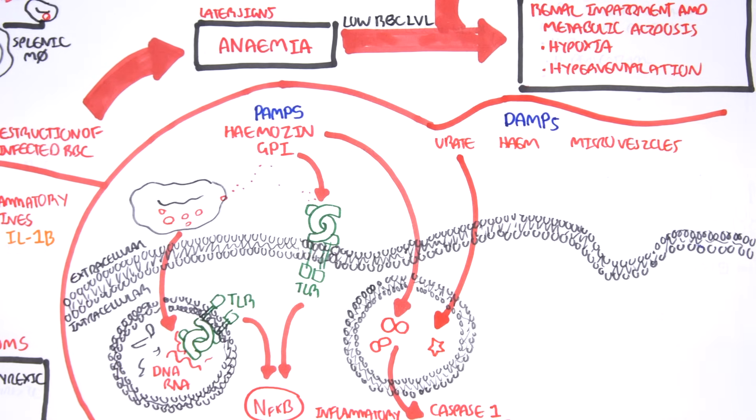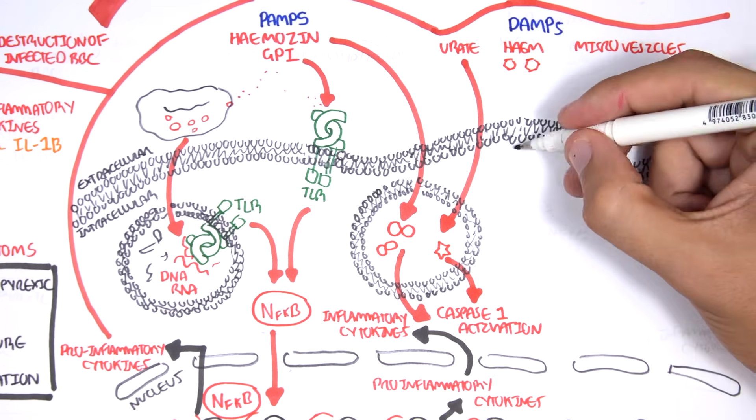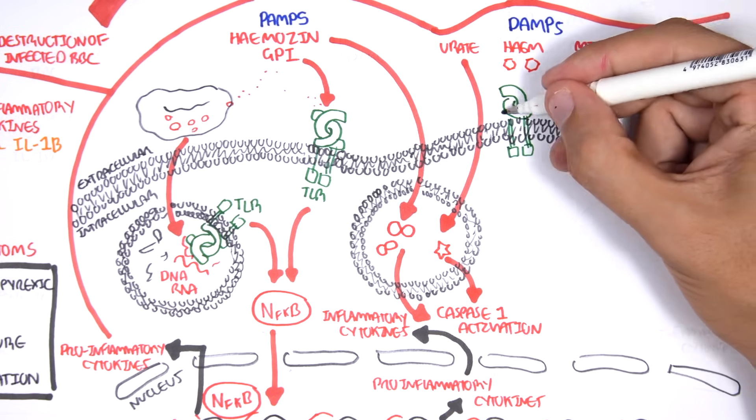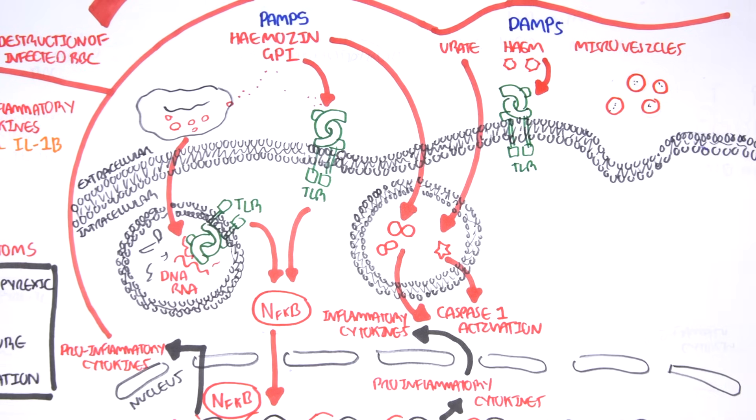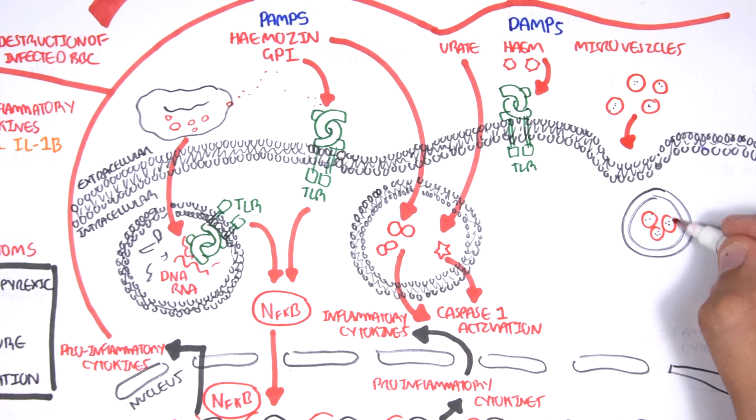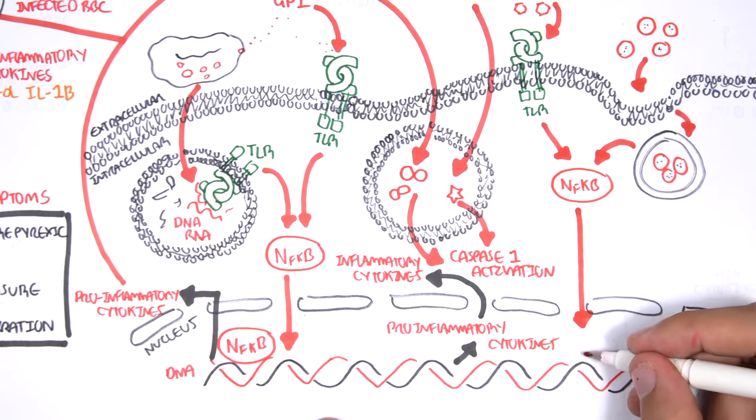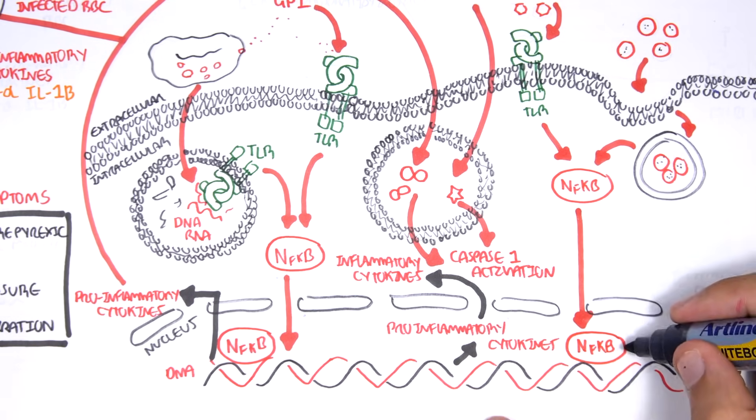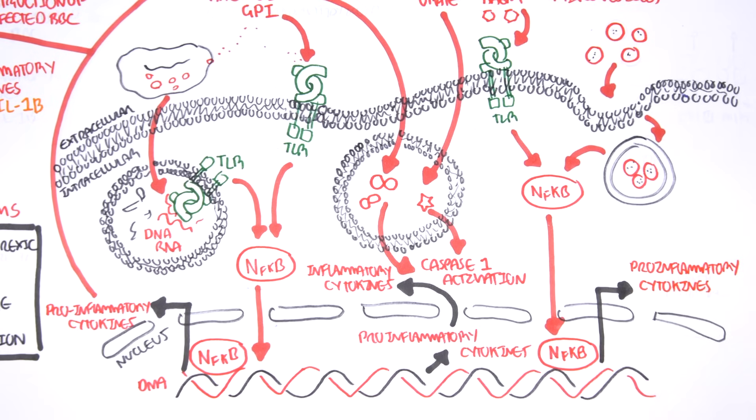Urate can be endocytosed, causing activation of caspase-1. And we know what caspase-1 does. Heme can be recognized by plasma membrane toll-like receptors. The microvesicles and toll-like receptors can lead to the activation of the nuclear factor kappa B, which, as we know, is a transcription factor activating the transcription of pro-inflammatory cytokines, TNF-alpha and interleukin-1b, which subsequently gets activated by caspase-1.